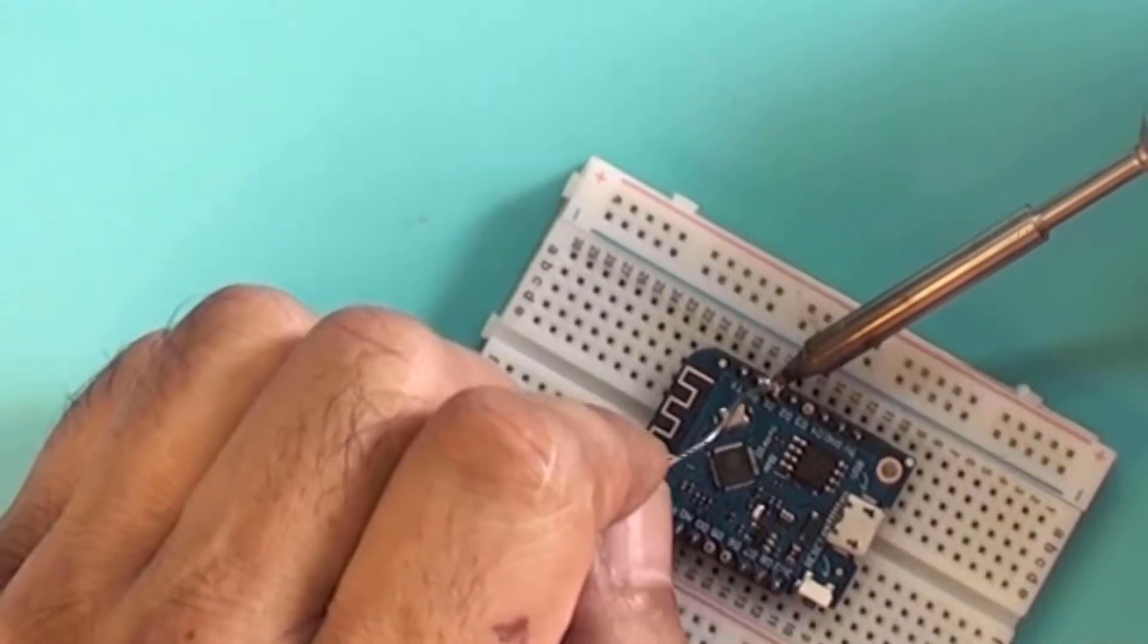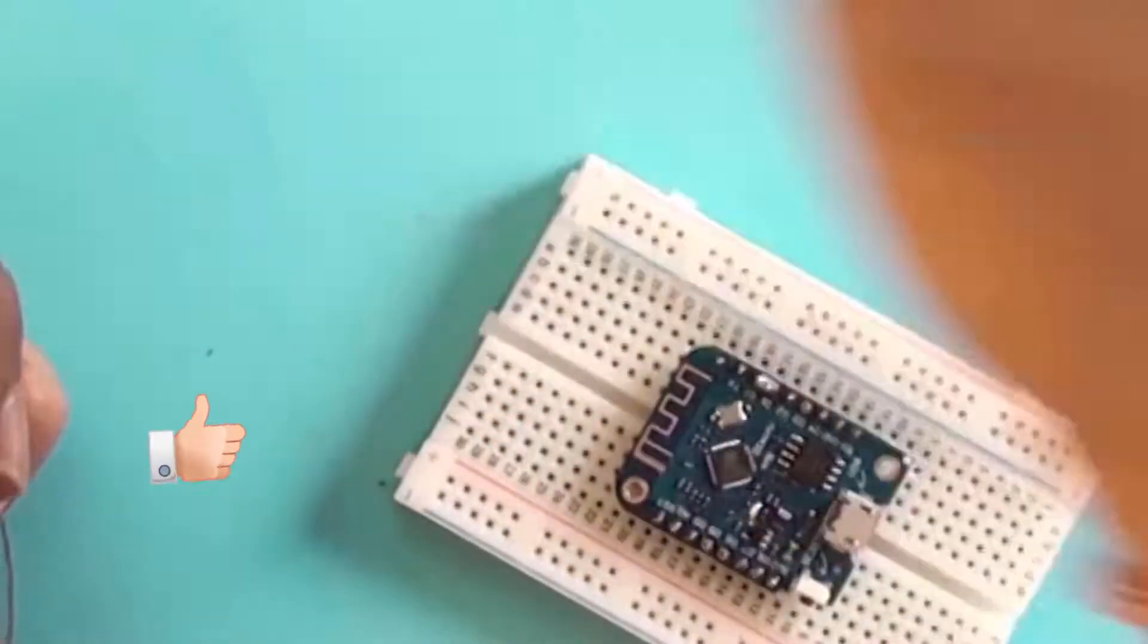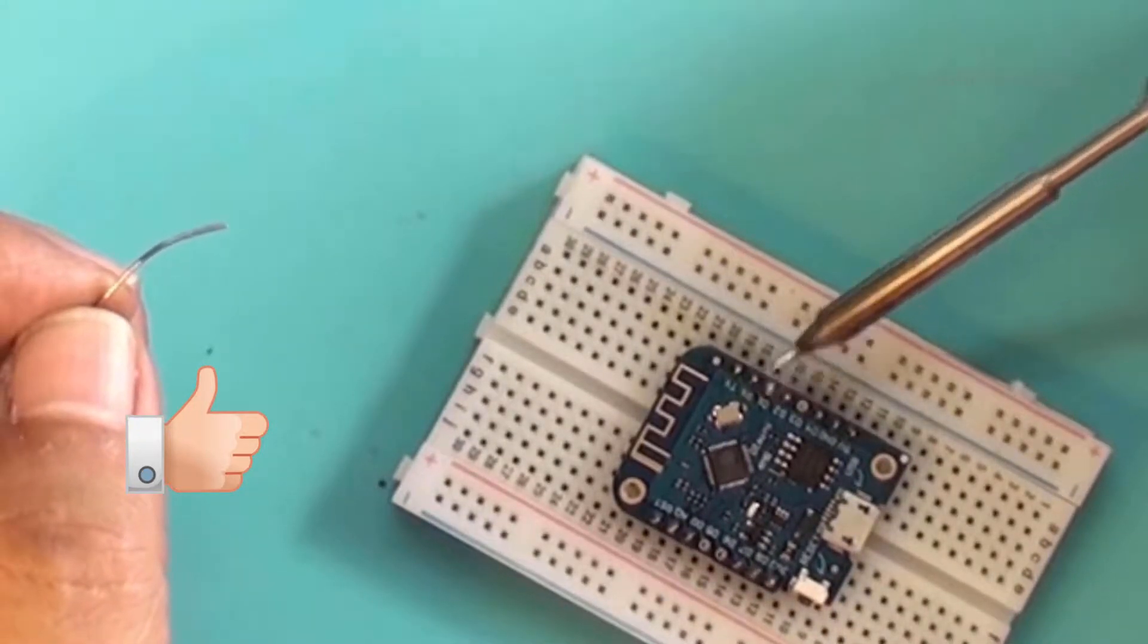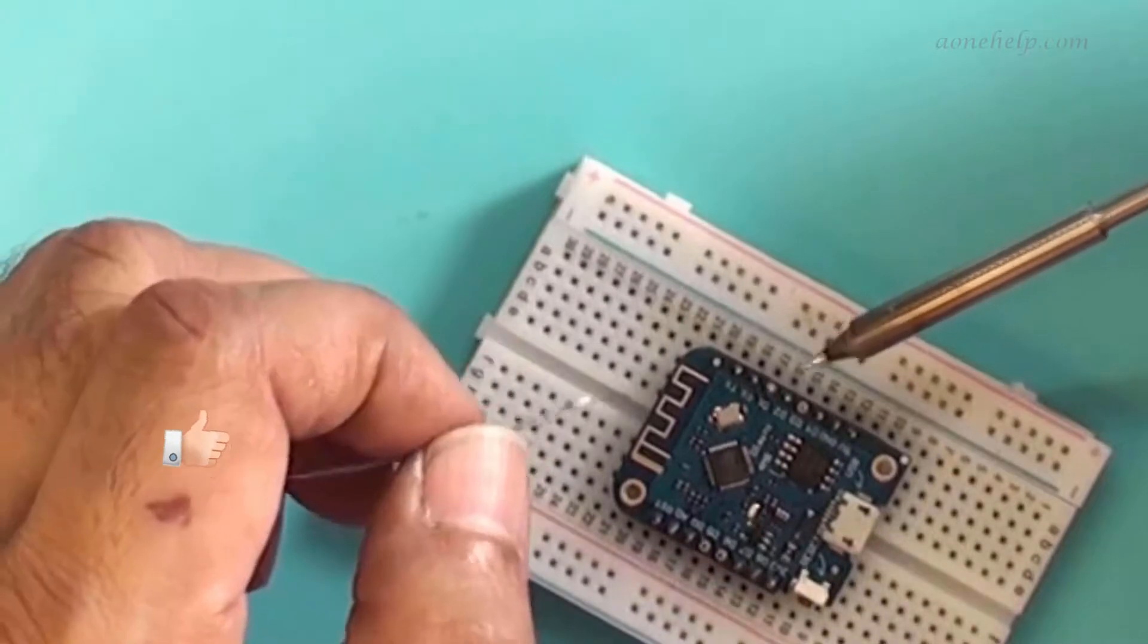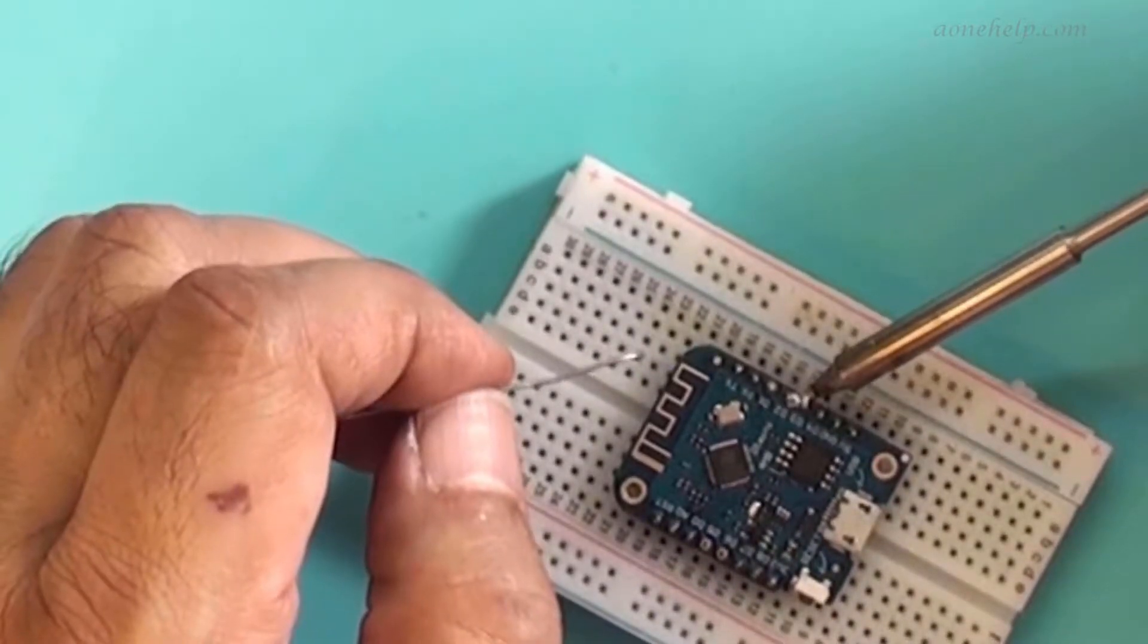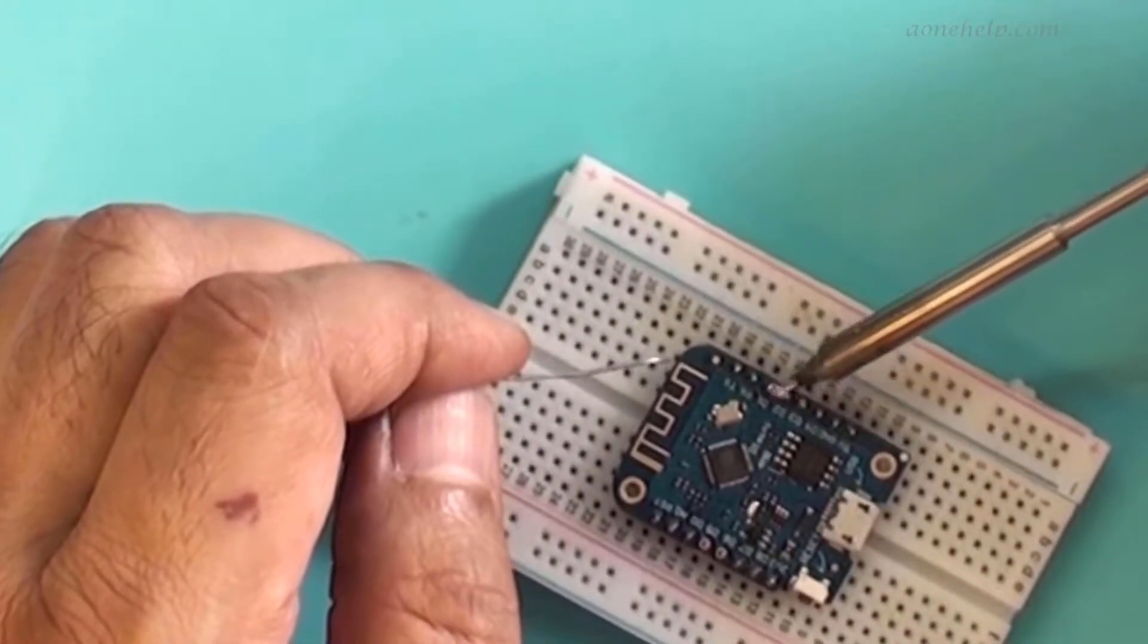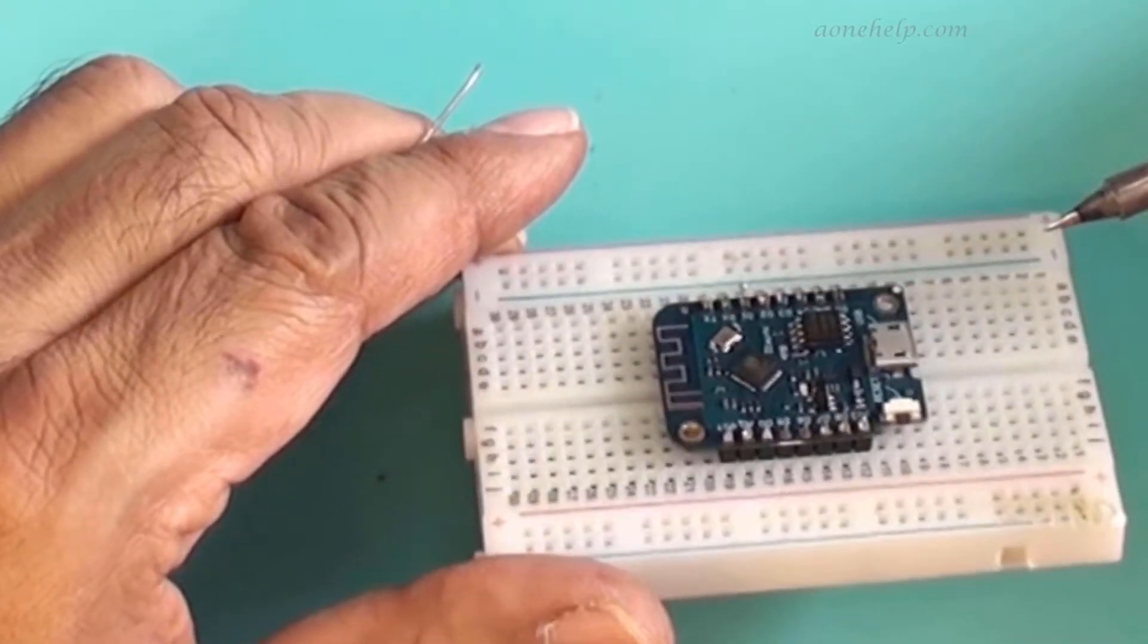This soldering iron station is digital temperature-controlled with OLED display and its model is Mini TS-100. Its power varies from 17 to 65 watts and comes with 9 different bits and can cover any type of soldering. As per our past experience, this soldering iron is one of the best soldering stations for electronics projects. We are making a detailed video about this soldering station and will be uploading the same soon.